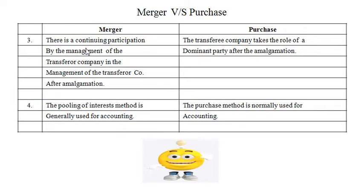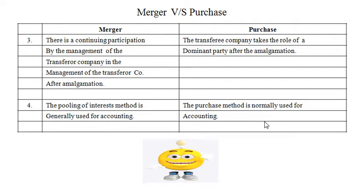The third point of difference: in merger, there is continuing participation by the management of the transferor company in the management after amalgamation. In case of purchase, the transferee company takes the role of a dominant party after amalgamation. Fourth point: the pooling of interest method of accounting is generally used in case of merger, whereas the purchase method is normally used for amalgamation in the nature of purchase.